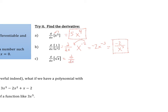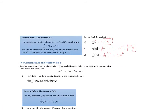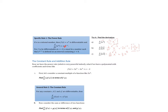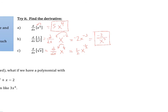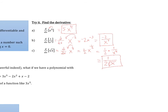One more example: d/dx of the square root of x. The square root of x is x to the one half. Drop the power down to get one half times x to the power of one half minus one, which is negative one half. Writing with positive exponents, x to the negative one half is 1 over x to the one half, or 1 over the square root of x. So the derivative of the square root of x is 1 over 2 times the square root of x — one to memorize.